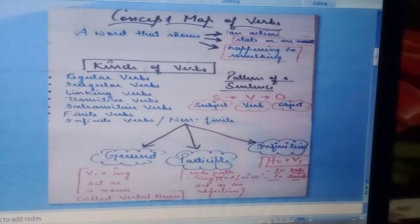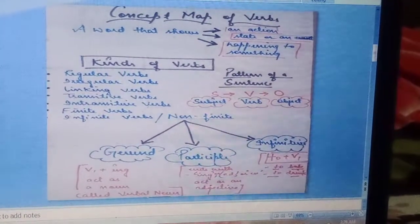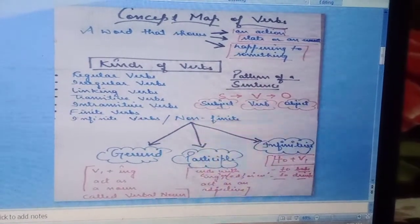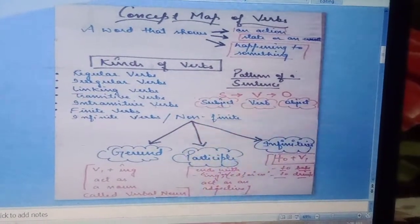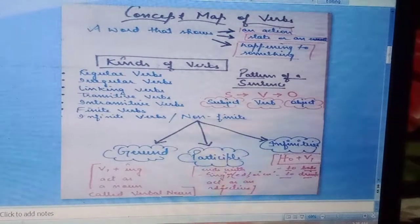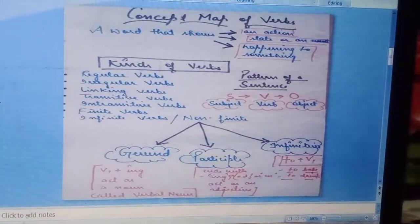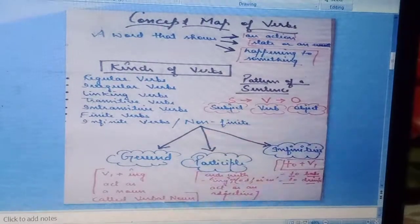Now here is a concept map of verb. Let's see different kinds of verbs. First one is regular verb. Second, irregular verb. Linking verbs, transitive verbs, intransitive verbs, finite verbs and non-finite verbs.